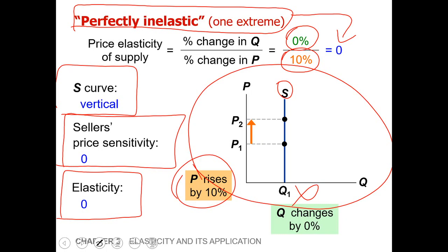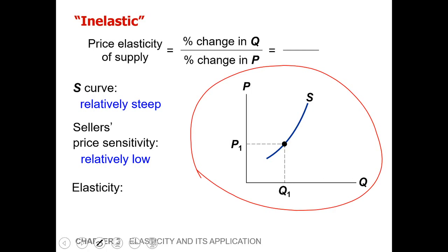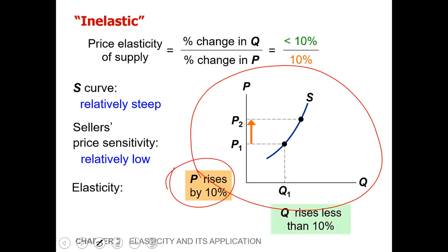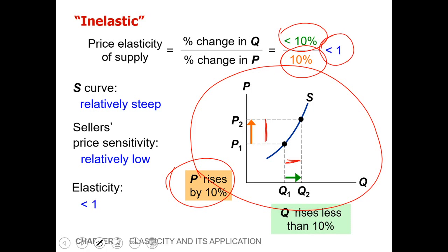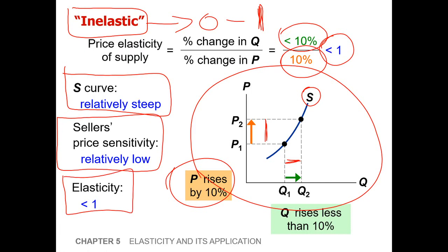The second case is the inelastic supply curve. The price rises by 10 percent from P1 to P2, and the supply rises by less than 10 percent from Q1 to Q2. So the percentage change in quantity is less than 10 percent, and percentage change in price is 10 percent, meaning the final answer will always be less than one. This is called the inelastic supply curve — elasticity is always between zero and one. The supply curve is relatively steep, and sellers' price sensitivity is relatively low.